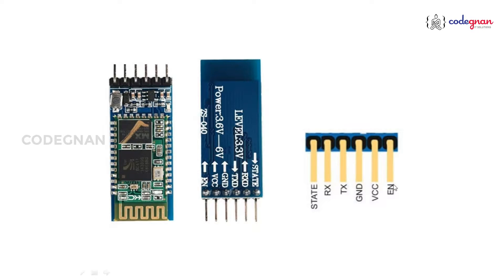The EN pin — EN means Enable pin — helps us toggle between data mode and AT command mode. In data mode, we send or receive data from the Bluetooth module. In command mode, we can configure the Bluetooth module to work as a slave or master.